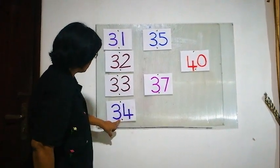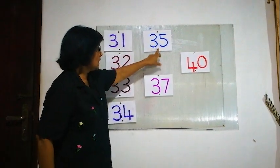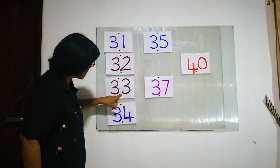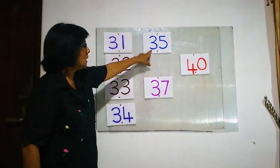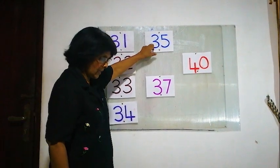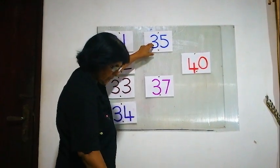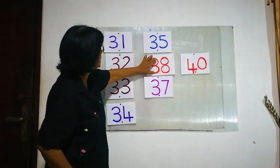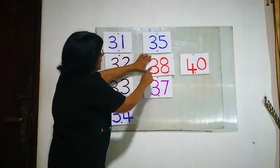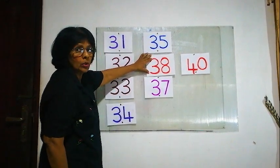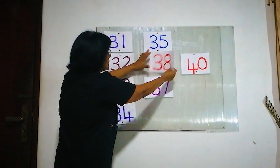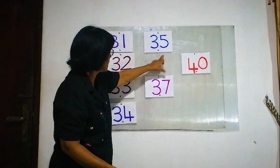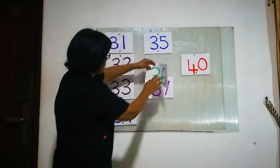Now here, after 34, what is this number? 35. 31, 32, 33, 34, 35. After 35, what is this number? No. After 35, what is the next number? 35, 36. Is this correct? 36, 36.